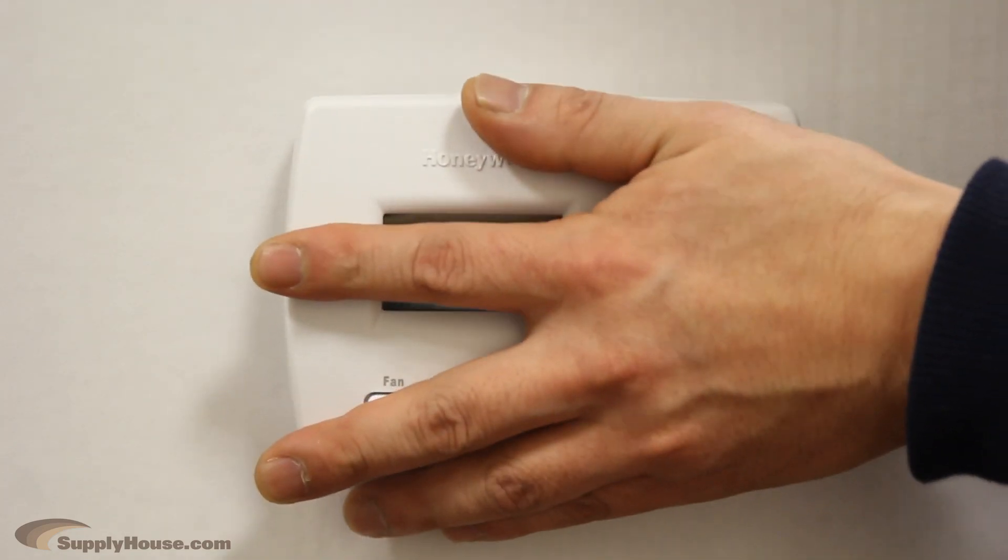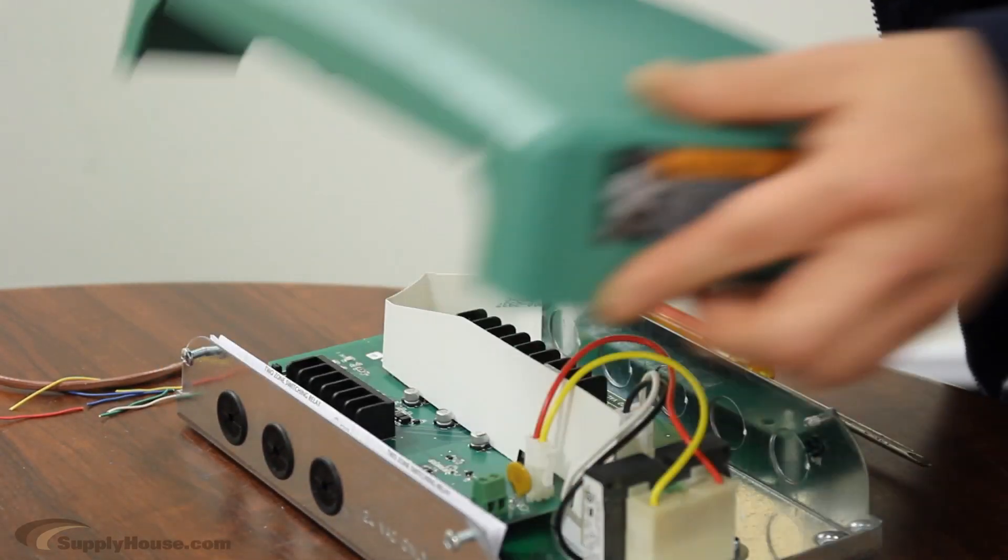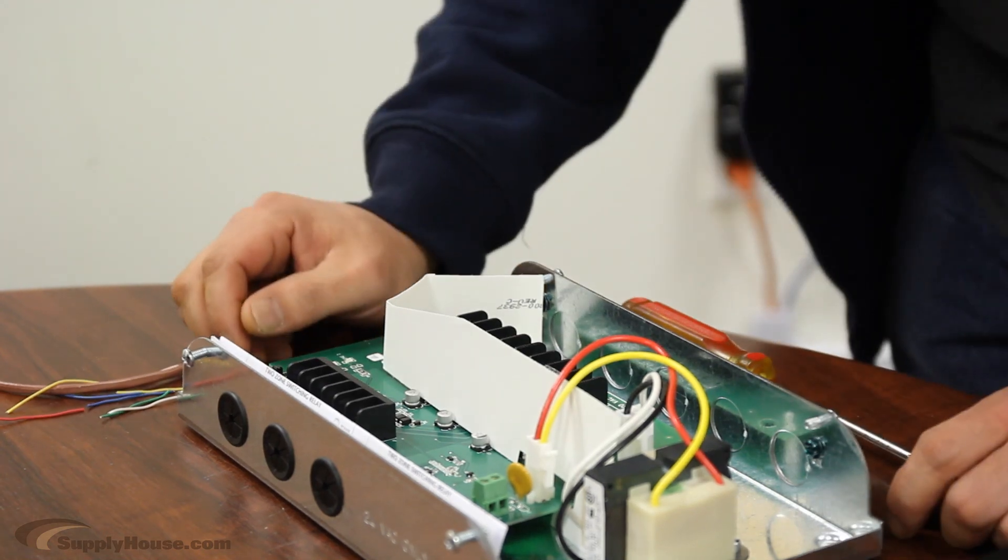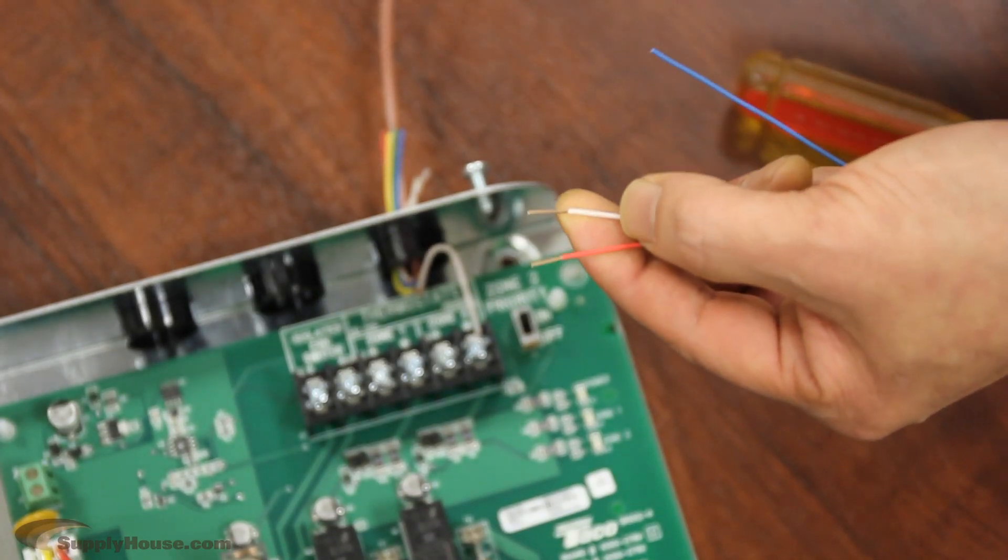Next, we will wire this thermostat to our switching relay. We wired one thermostat, but for this example, we will wire two zones to this relay. First, cut back your wires about a quarter of an inch.